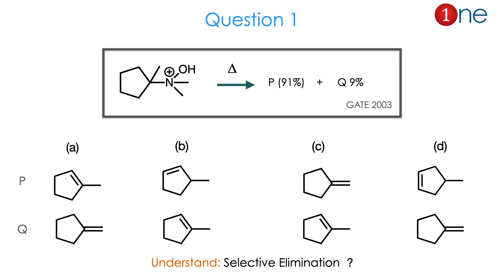Let us see question number 1. The starting material is cyclopentane attached with a quaternary ammonium salt, which has a positive charge compensated by a leaving group. You are also having a methyl group. They ask you to find the product. There are two possibilities for the product P and Q. P is the major product and Q is the least product at 9%.